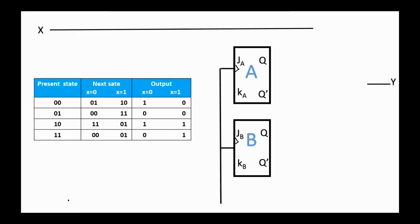Since we have four states, we need two flip-flops. The circuit has one input X and one output Y. Here is the skeleton of the sequential circuit: we have two JK flip-flops, A and B, one input to the circuit, and one output from the circuit.